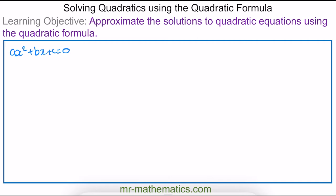We're going to do this using the quadratic formula, where x is equal to minus b, plus or minus the square root of b² minus 4ac, all over 2a.